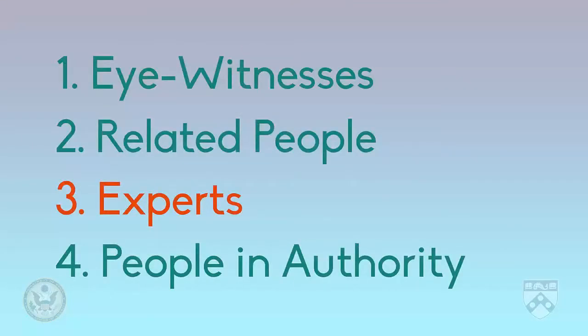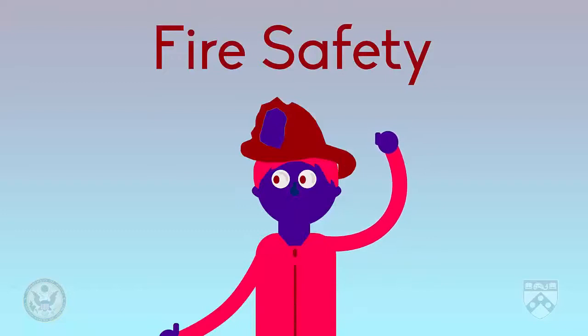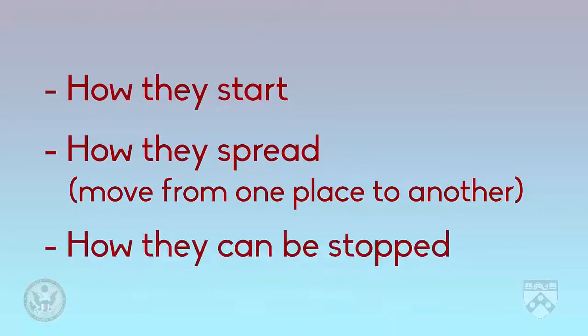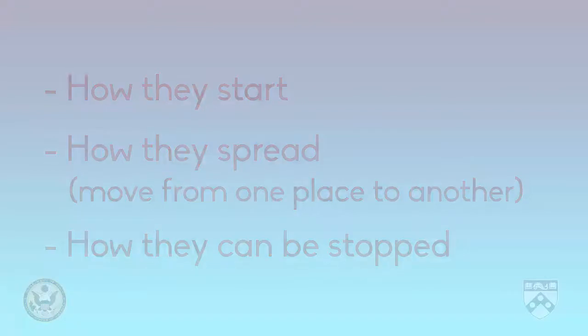The third type of source is an expert in the field of the story. Because the story is about a fire in a factory, the expert will probably work in fire safety. It's not necessary for the expert to know about this particular fire — it's enough that they're an expert in the field. This person can talk generally about what happens in fires of this type: how they start, how they spread and move from one place to another, and how they can be stopped. But this person will not usually guess what happened in this particular fire, unless they have specific knowledge about it.